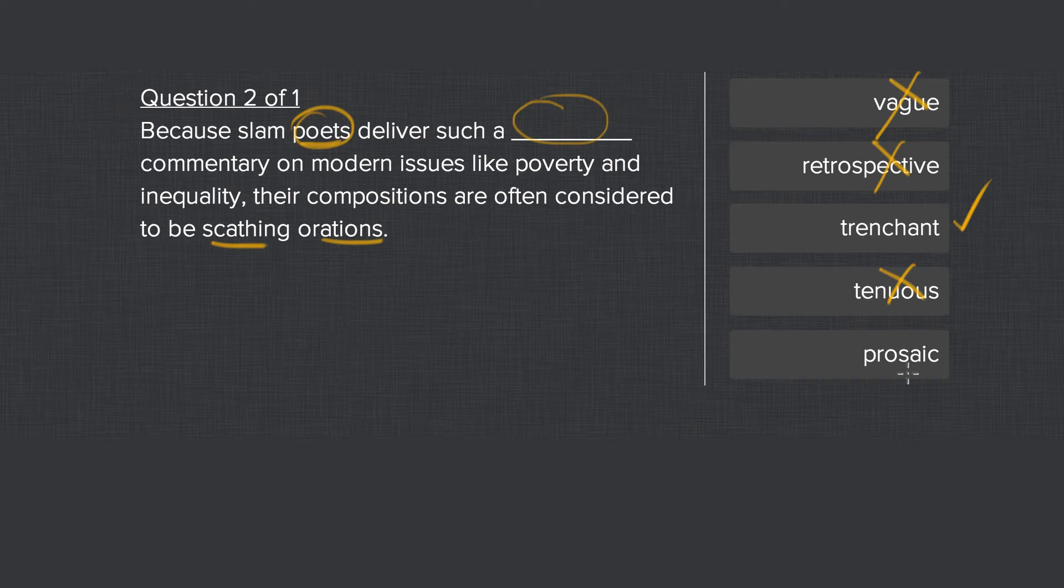And prosaic you can eliminate if you know the root word because it's almost designed to mean the opposite of poetry. So you can think of poetry and prose as being opposites. One is very drab and bland, and the other is very vibrant and colorful and full of emotion.